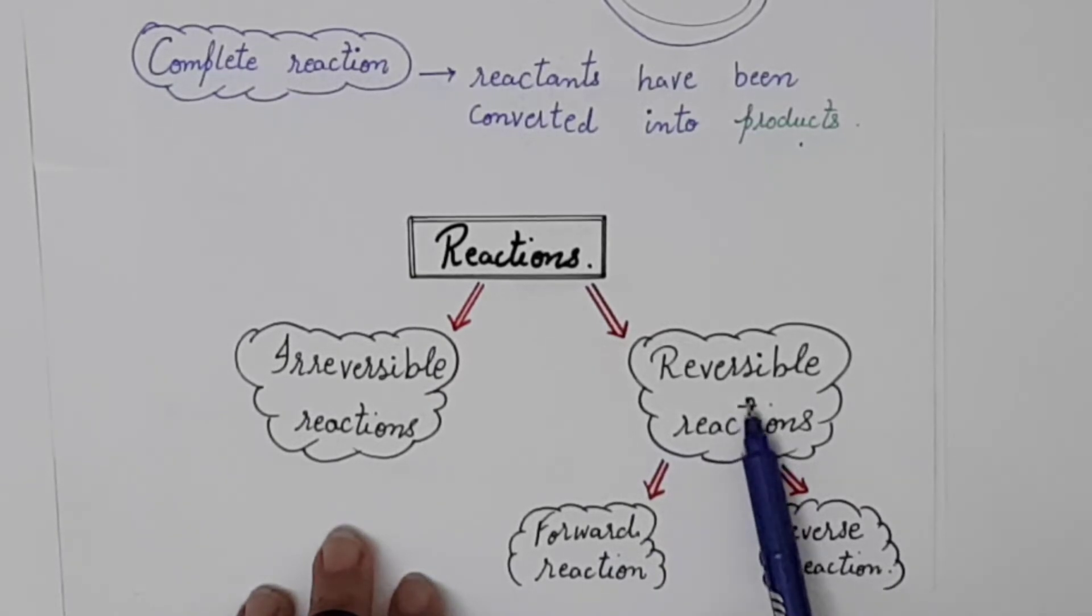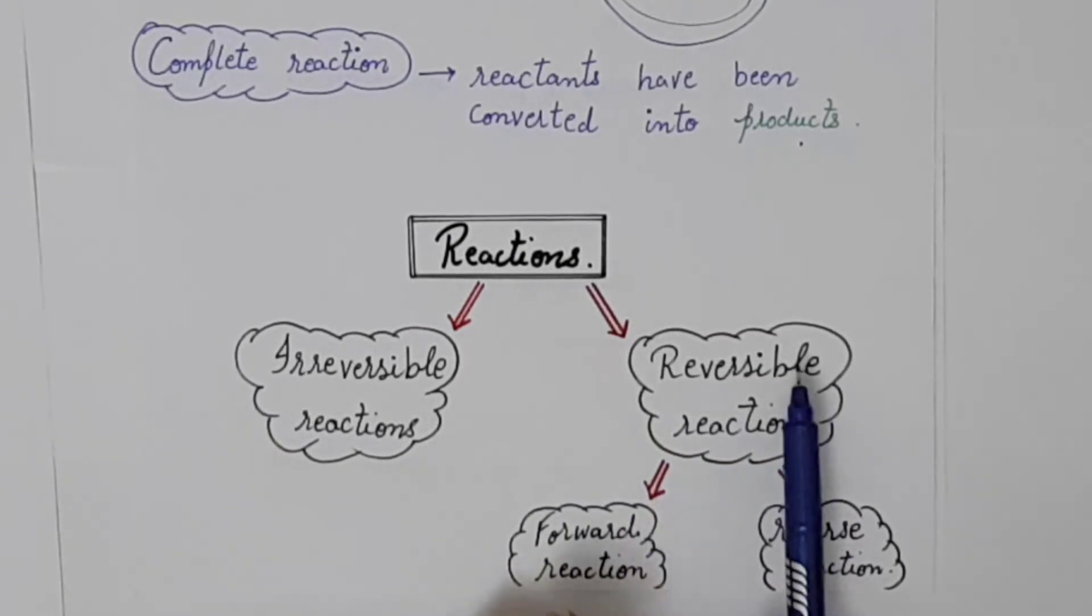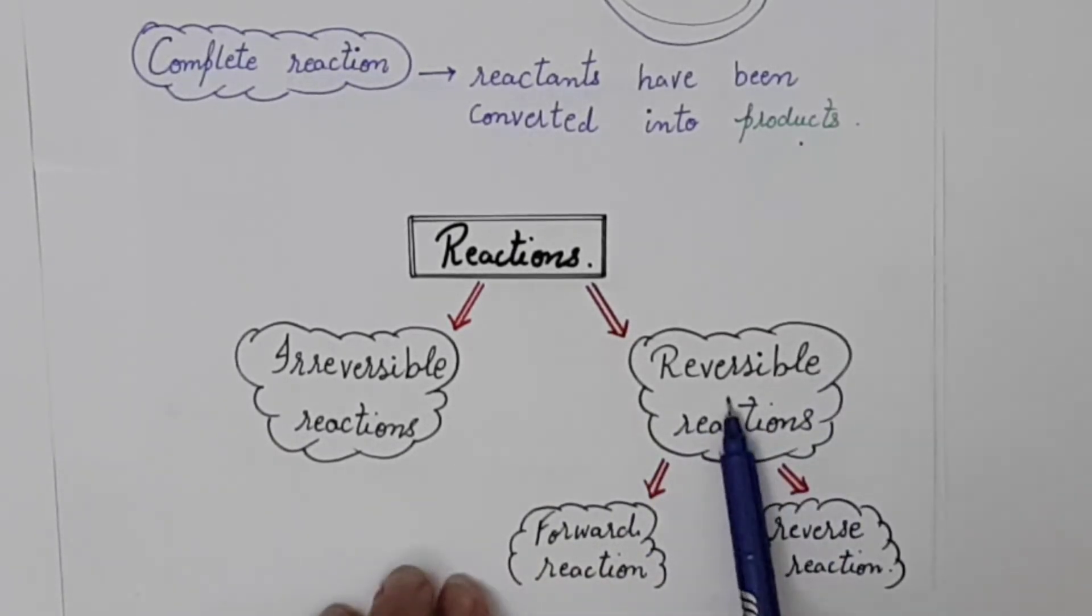And one is reversible reaction. Reversible reaction is that you have to combine the product again and combine the reactant. Let's elaborate this in the further lecture. In the reversible reaction, we see two types of reactions: forward and reverse reaction. We have to look at these two types of reactions.